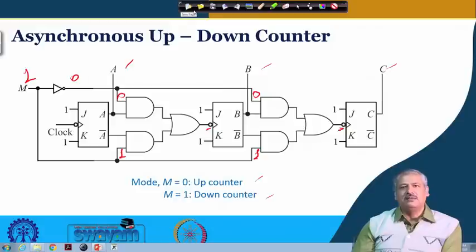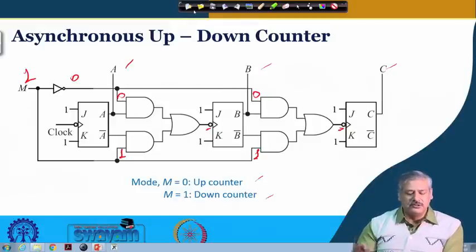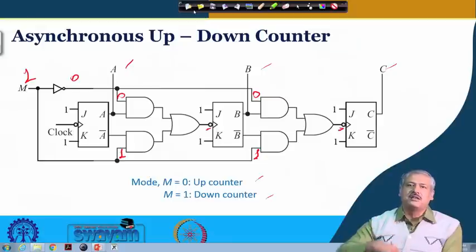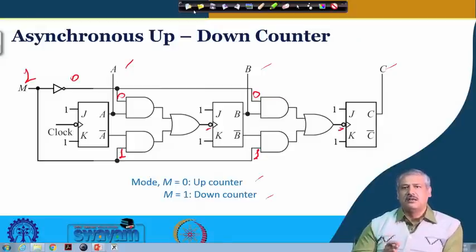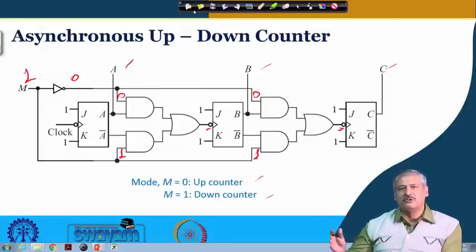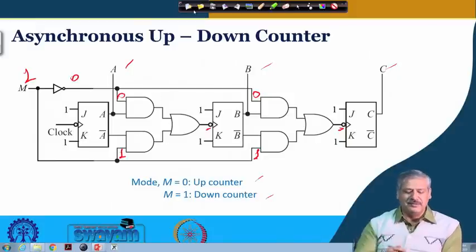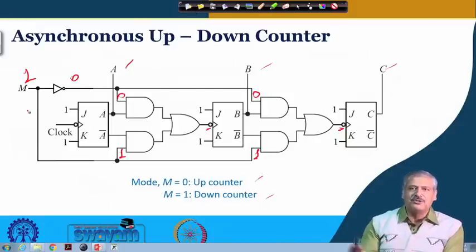While counting, if the counter has counted up to a particular value and you then change M, it will start counting in the opposite direction. So it could count up 0, 1, 2, 3, 4, 5 and then when M is set to 1 it will start down counting.